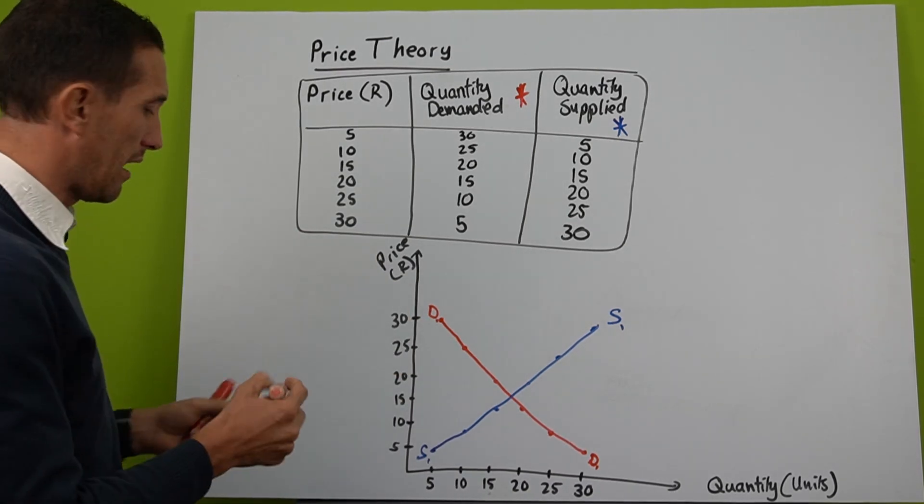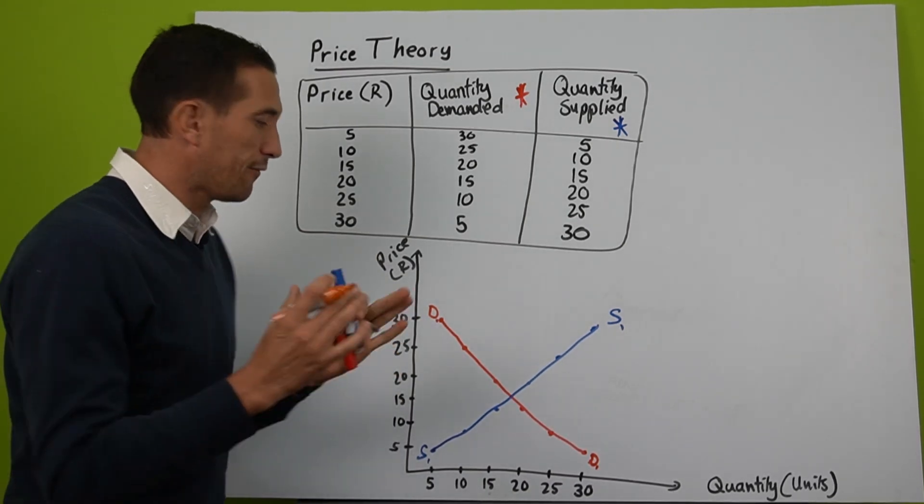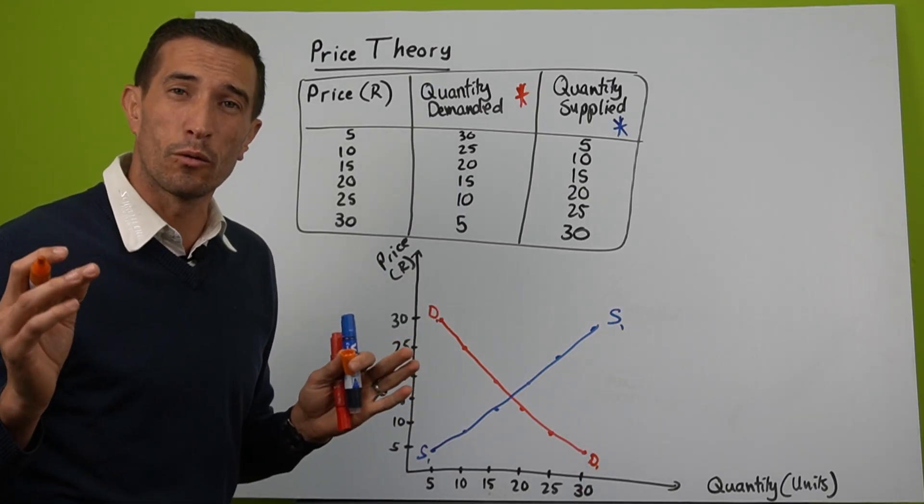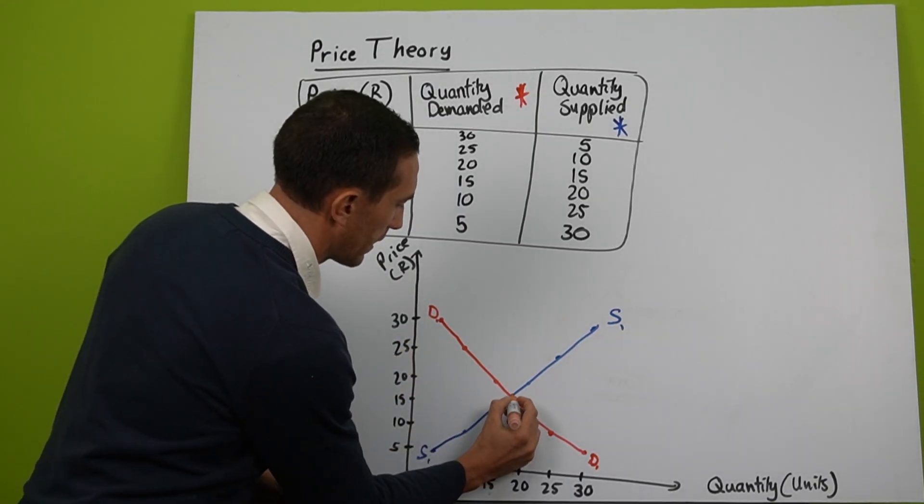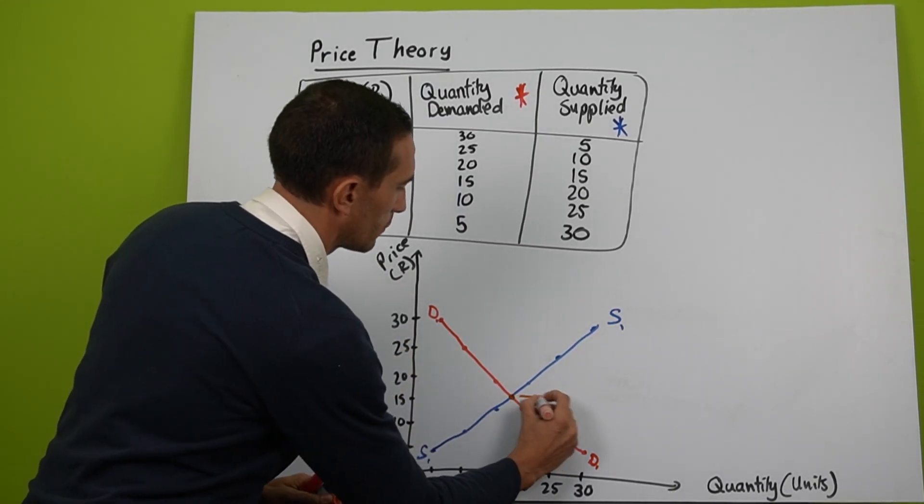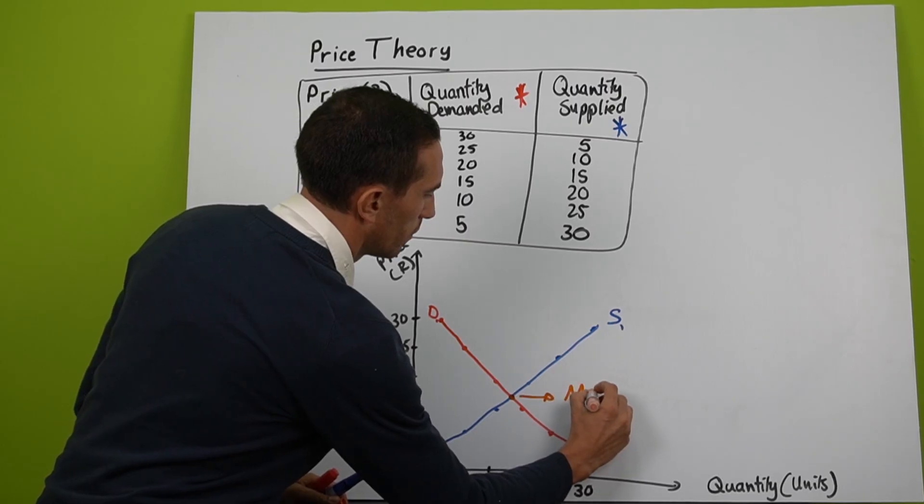Now this is the fun part. If they ask you what is market equilibrium, this is your first place. This is where they intersect, is what we call market equilibrium.